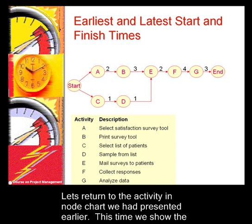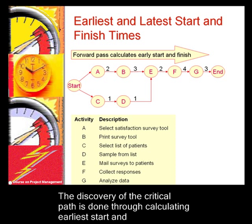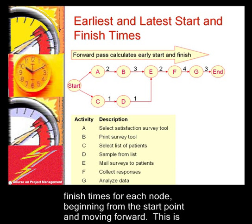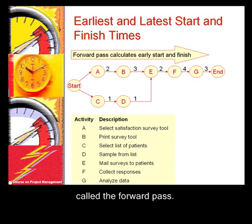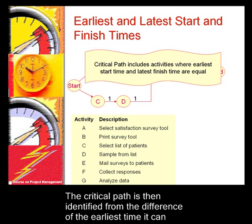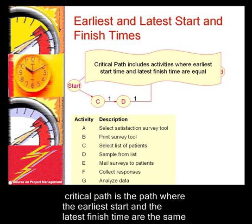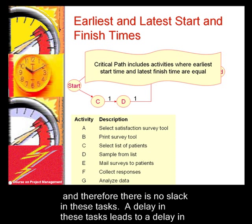Returning to the activity-on-node chart, this time we show the duration of each activity on the arrows from each node. The discovery of the critical path is done through calculating earliest start and finish times from each node, beginning from the start point and moving forward — this is called the forward pass. The backward pass calculates latest start and finish times for each activity. The critical path is identified from the difference between the earliest time a task can start and the latest time it can finish; this difference is called slack time. The critical path is the path where the earliest start and the latest finish time are the same, meaning there is no slack. A delay in these tasks leads to a delay in the entire project.